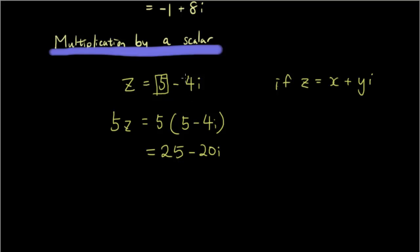So x plus yi. Okay, now if kz equals k times (x plus yi).